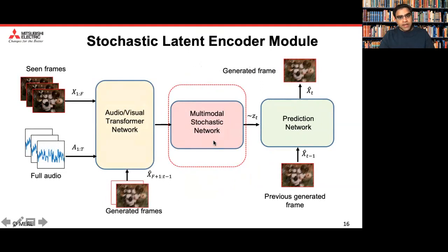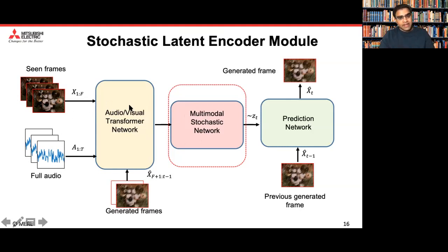The multimodal stochastic network is conditioned on an audiovisual transformer network. The audio from the full input and the scene frames — the visual part — are fused in a latent space by this audiovisual transformer network, which provides conditioning on the stochastic network to generate distributions from which the latent Z is sampled. That Z then controls how the future is being generated.